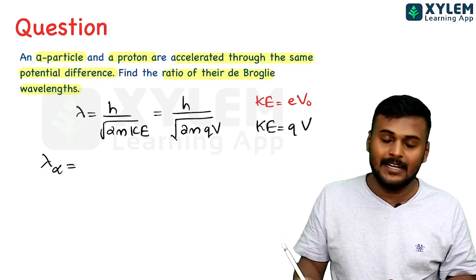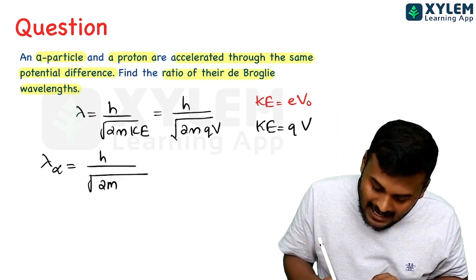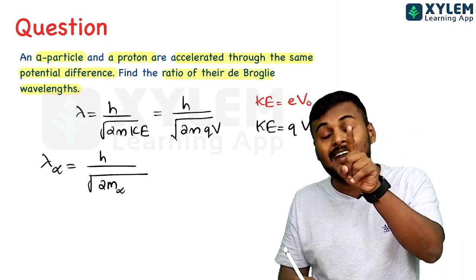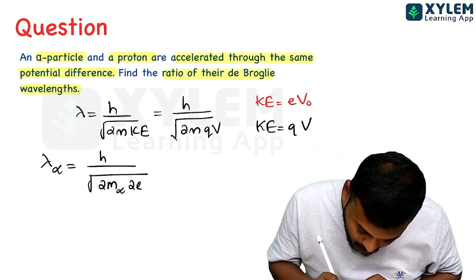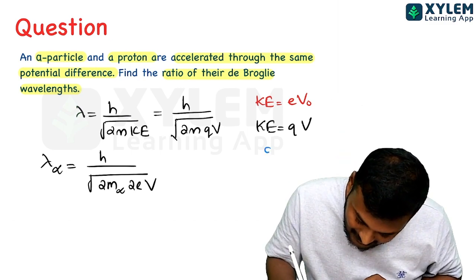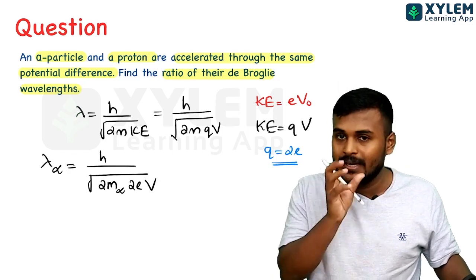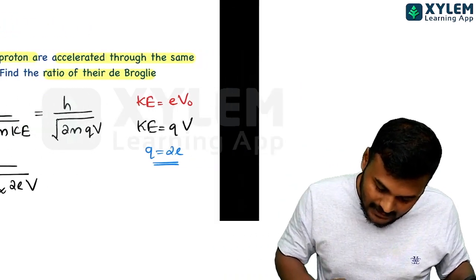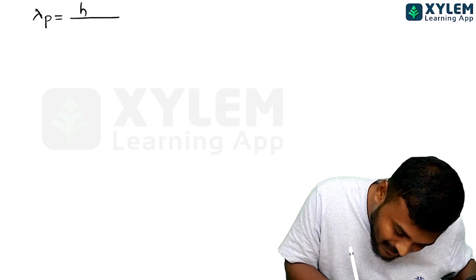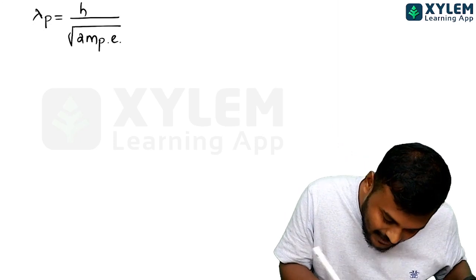Wavelength of alpha particle: lambda-alpha equals h divided by root of 2 times m-alpha times charge of alpha particle times V. Since alpha particle is helium, charge equals 2e. So lambda-alpha equals h divided by root of 2 times m-alpha times 2e times V. For proton: lambda-p equals h divided by root of 2 times m-proton times e times V, since proton charge equals e.